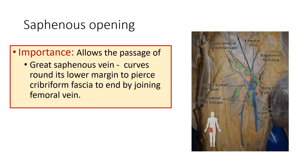In this picture, you can see the saphenous opening with the falciform margin clearly, and the ill-defined medial margin. You can see the great saphenous vein curving around the lower margin of the saphenous opening to pierce the cribriform fascia and end by joining the femoral vein. The importance of the saphenous opening is to allow the great saphenous vein to join the femoral vein by curving around its lower margin and piercing the cribriform fascia. You can also see the superficial epigastric vein and circumflex vein joining the great saphenous vein.